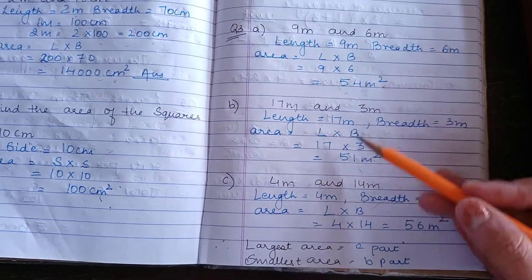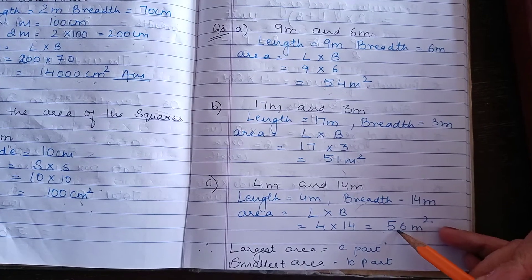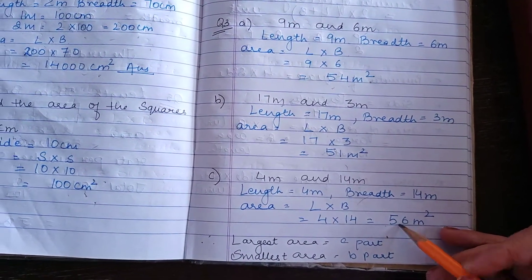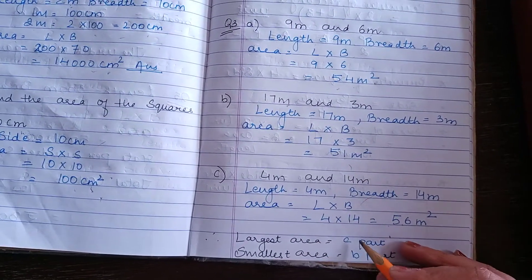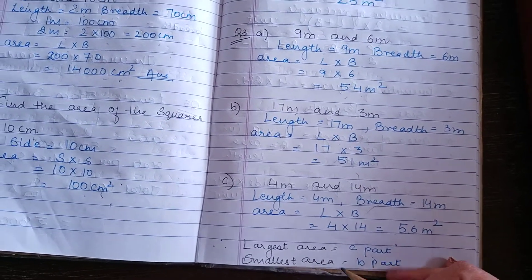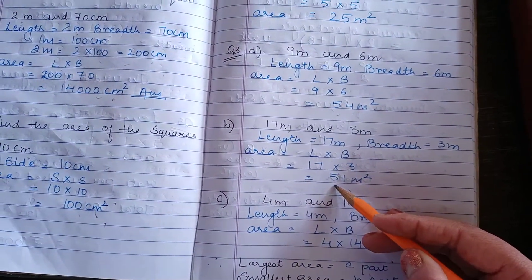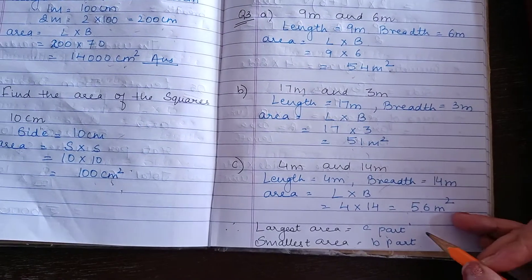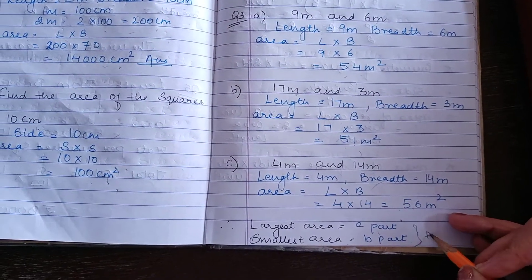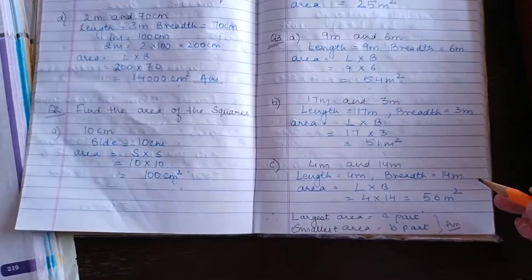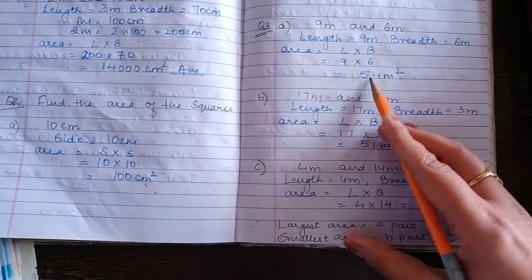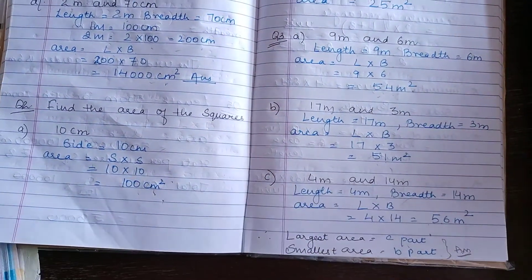Here it is 54, 51, 56. So the largest area is 56. Therefore largest area is equal to part C. And smallest area is 51, which is the smallest number. So part B answer is smallest. So these two are your answer. So this was question number 3, exercise 10.3.